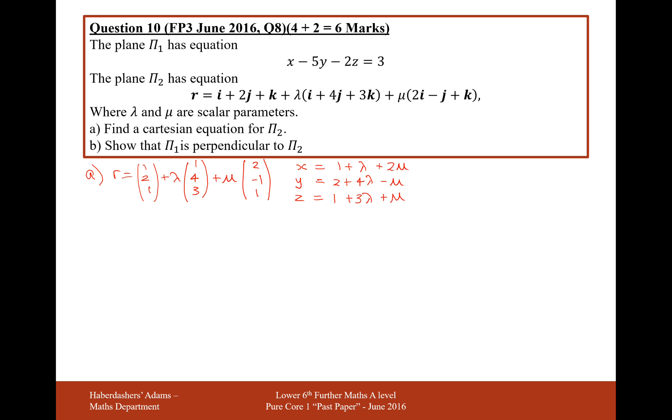So what we have to do is make one of these lambdas or mu's the subject and substitute it into the other formula. What we're looking to do is not solve these simultaneous equations, because we've effectively got too many letters, but just eliminate λ and μ from the equations so we've just got an equation with x, y's and z's in, like we do for π1. On the first equation, I'll make λ the subject, so it's going to be x minus 1 minus 2μ.